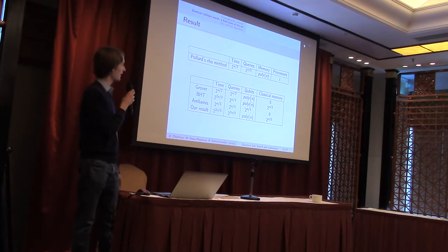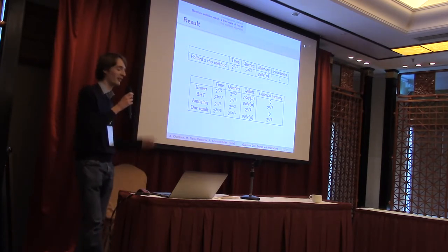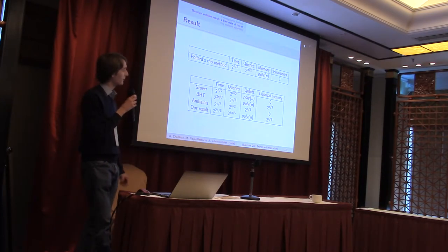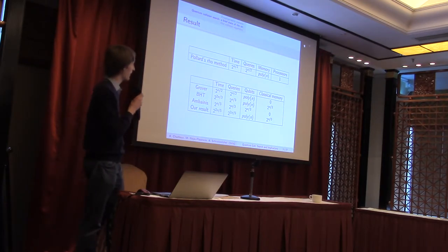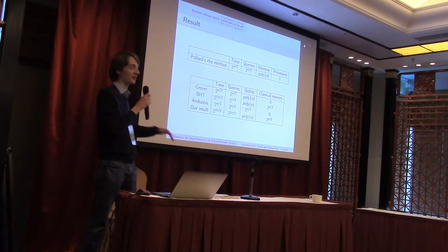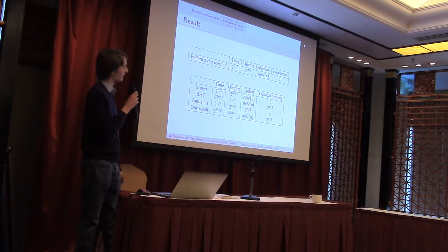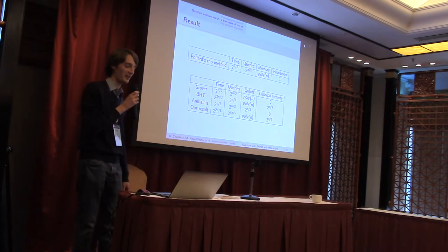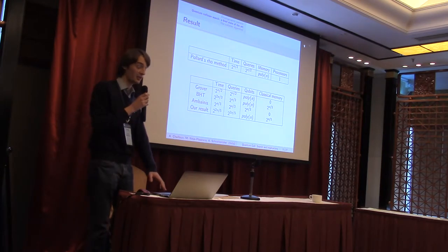So, this is our result. We have a new line here. And we are able to improve on the classical 2 to the n over 2, with a suboptimal number of queries, but using this polynomial number of qubits, a very small number of qubits. And there is also a small amount of classical memory that I have to explain later. But I'm keeping it there.